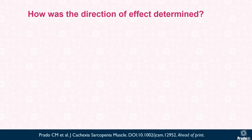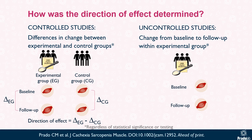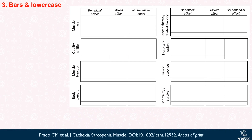But how was the direction of effect determined in our review? In controlled studies or studies with a control arm, we determined the direction of effect based on the differences in change between experimental and control groups. An exception was made for studies evaluating cancer therapy related toxicity, hospitalization, tumor response, or mortality and survival — in these studies, direction of effect was determined based on the change from baseline to follow-up within the experimental group. Notably, we determined the direction of effect regardless of statistical significance or testing.